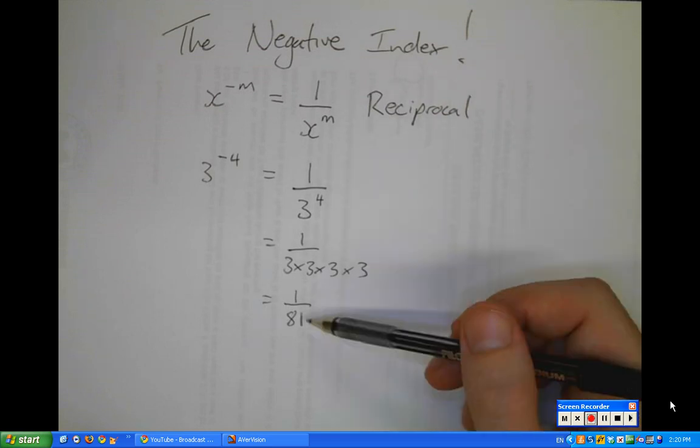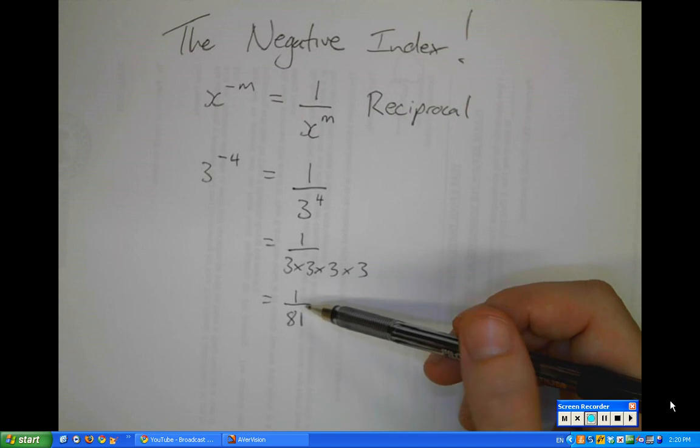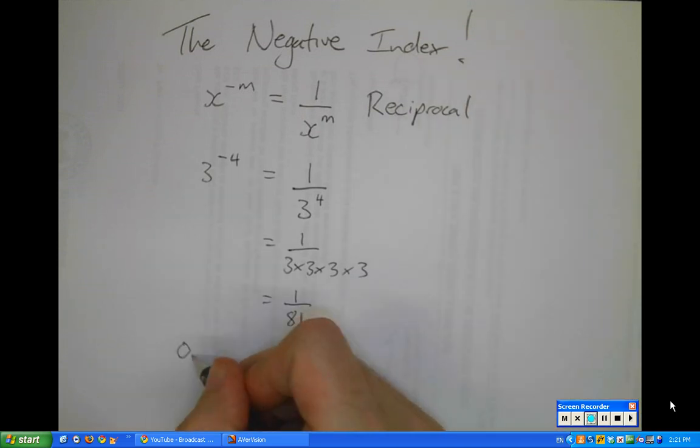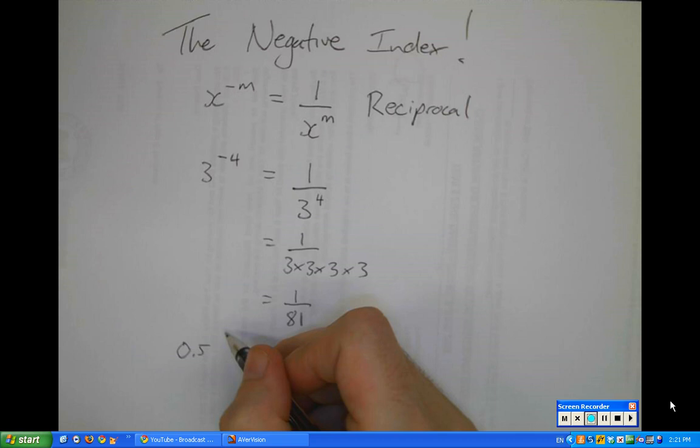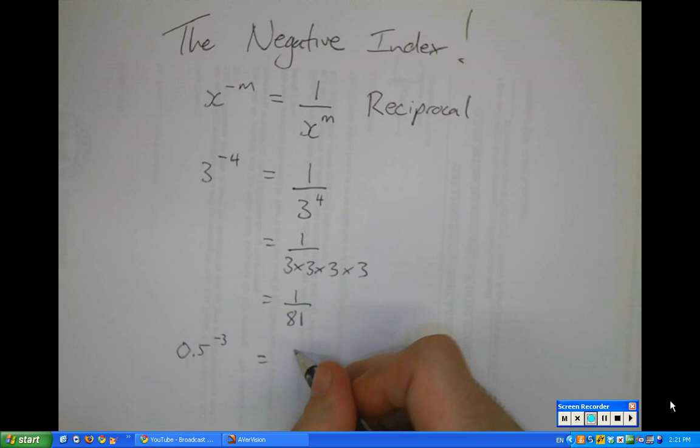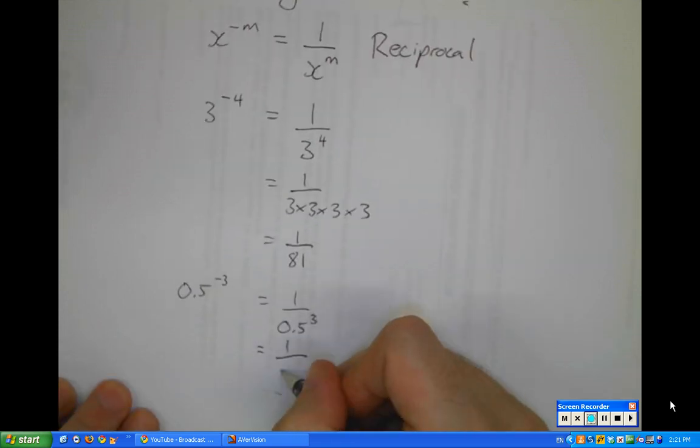Of course this isn't always going to be a small number. If I had 0.5 to the power of, say, minus 3, that would equal 1 over 0.5 to the power of 3, which would equal 1 over 0.5 times 0.5 times 0.5.